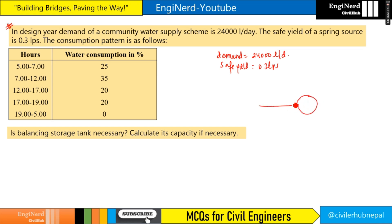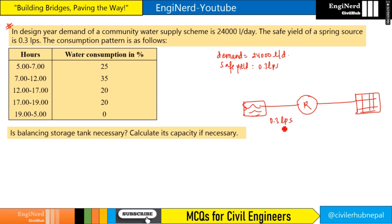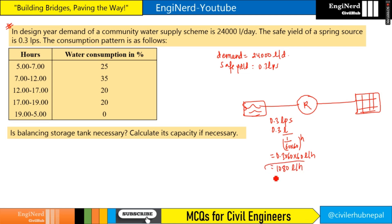If this is the spring source, this is the reservoir, and this is the distribution system to the consumers. The safe yield is 0.3 LPS. If we convert this into liters per hour, it will be 0.3 × 3600, which equals 1080 liters per hour for the supply part.